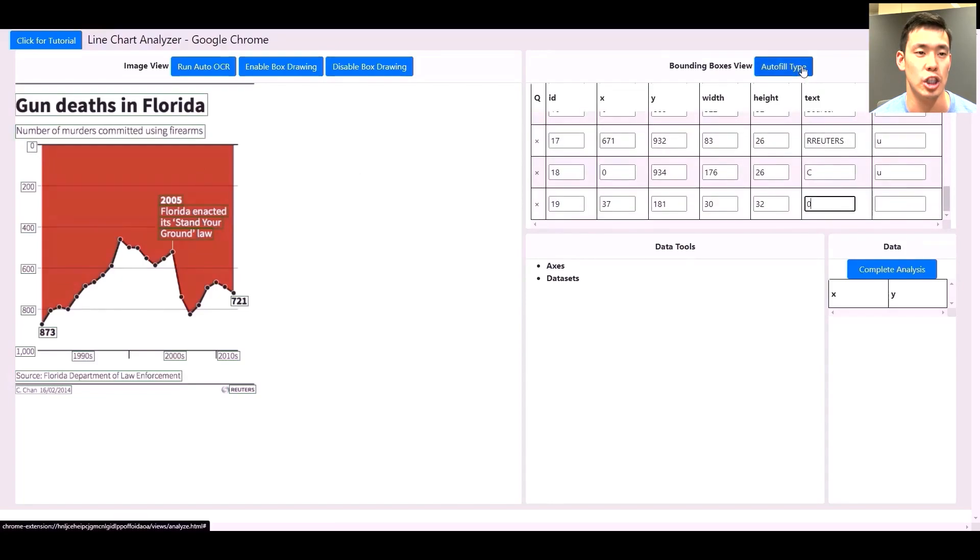Next, we use a machine learning model to classify the role of the text, such as axis labels and titles.